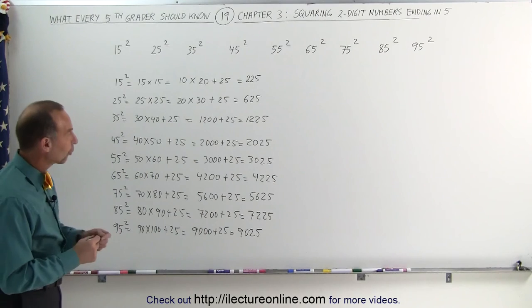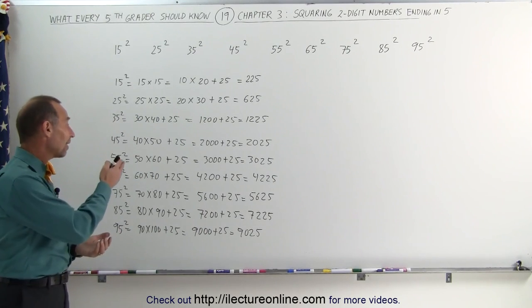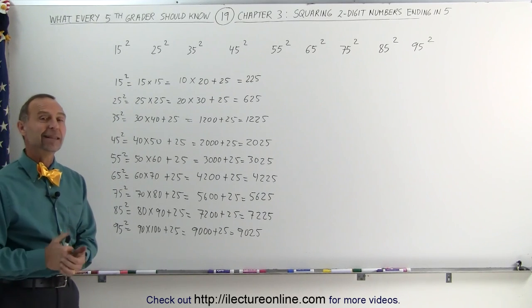See how easy it is to square a two-digit number that ends in a 5. Simply add 5, subtract 5, multiply together, add 25, and you get the result very quickly. And that's how it's done.